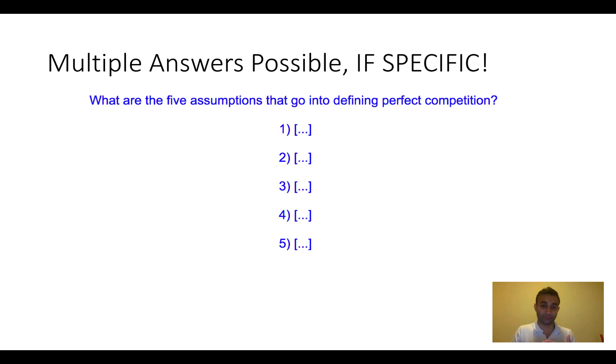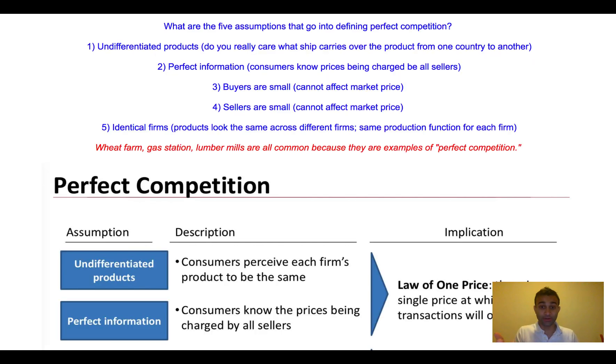So for me, in econ, there were five assumptions that went into defining perfect competition. What is perfect competition is when you have buyers don't influence price, sellers don't influence price, it's an undifferentiated product. So each of these things were things that I needed to know because going into the final, we were going to be tested on perfect competition. So you'll see here that I included all five of the requirements of perfect competition and then included an answer to it.